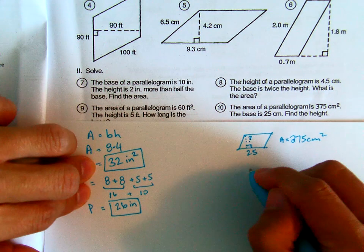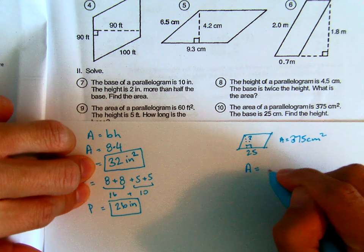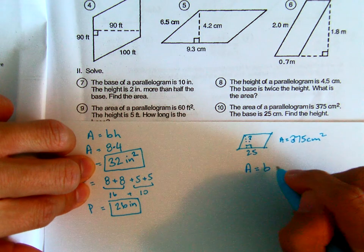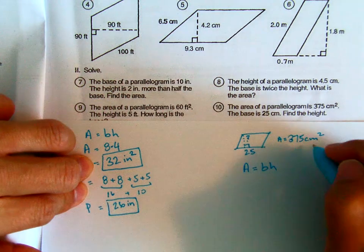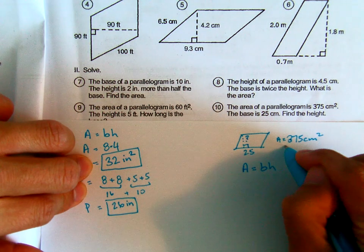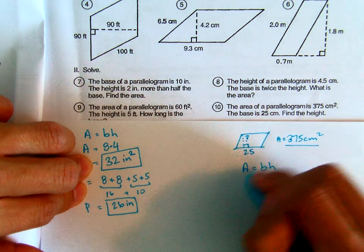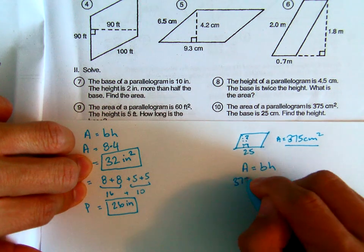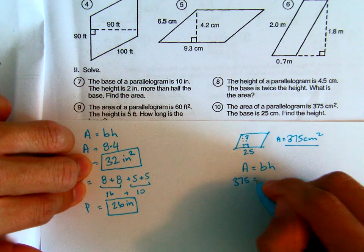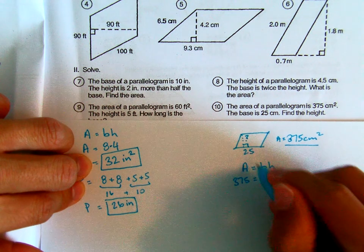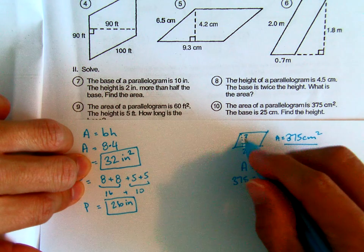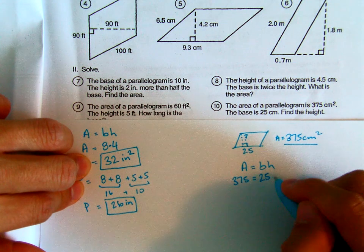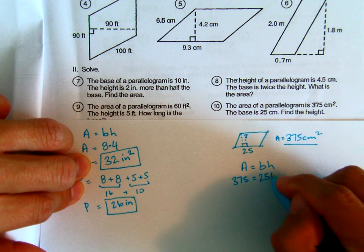I'm going to write my formula. Area equals base times height. So what do we know? Do I know the area? Well, I do. It's 375. So in place of A, I'm going to replace that with 375. Base. Do I know the base? I do. It's actually 25. Do I know the height? I don't know the height. It's a question mark. So I could just leave it as H. It's like a variable.